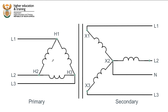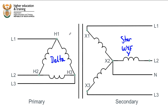So remember, this is a delta formation and this is a star or Y formation — you might even see it written as just the letter Y. I've also labeled the connection points. You'll very often see them labeled H1, H2, and H3 for the primary side and X1, X2, and X3 for the secondary side. I've also noted line 1, line 2, line 3.